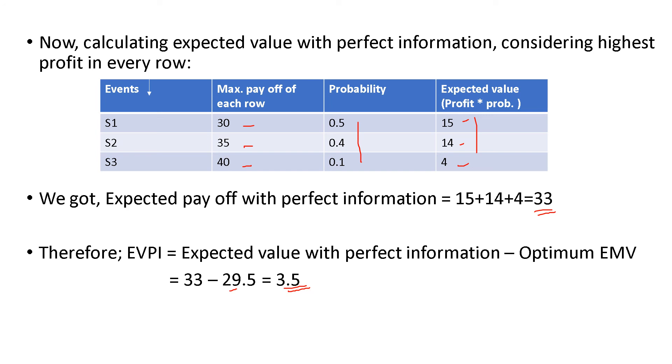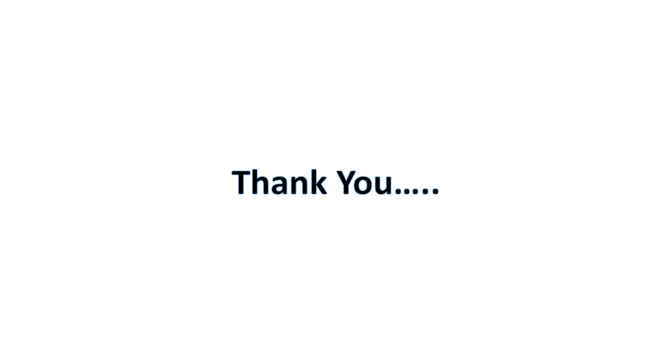That is the Expected Value of Perfect Information — EVPI. This is what we learned: decision making under risk. We know the probabilities clearly, and that is why we use this method. Thank you.